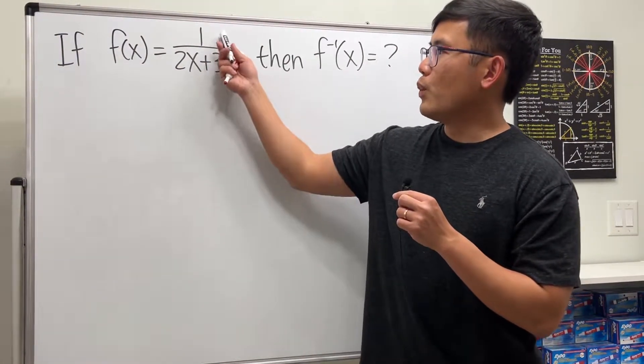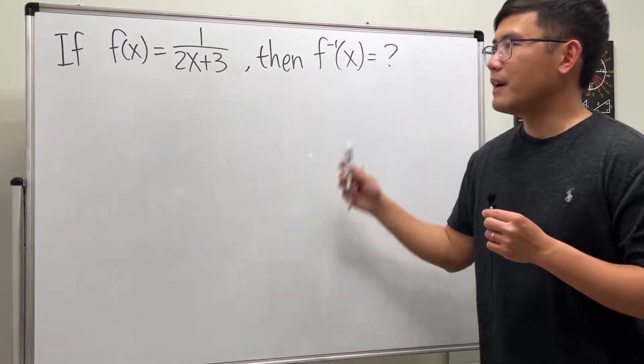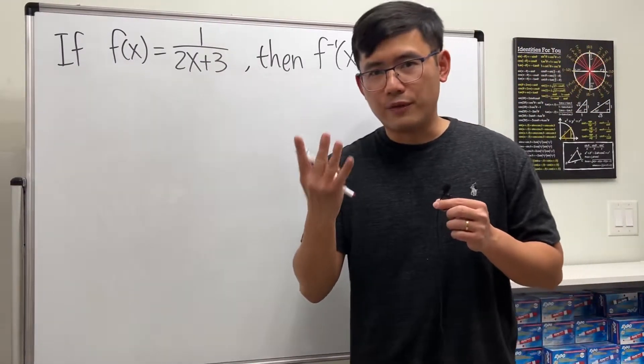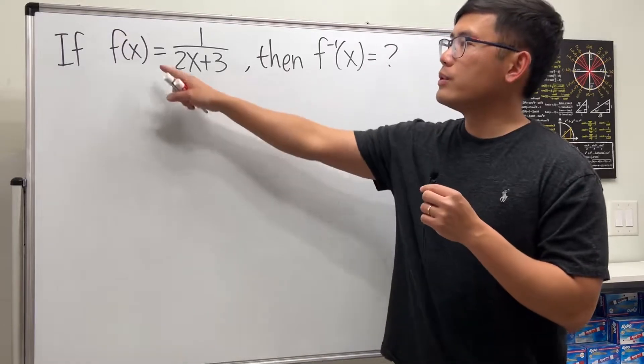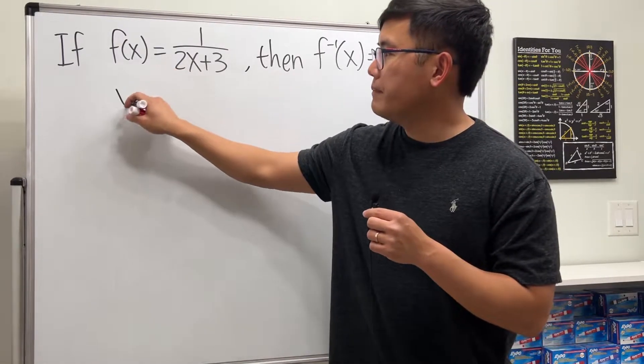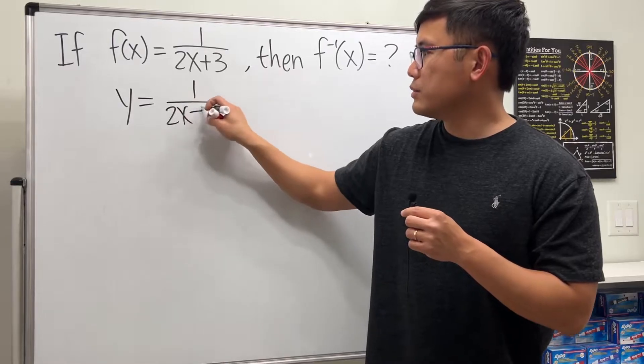Here we are given f of x is equal to 1 over 2x plus 3, and we are going to find its inverse. Follow the four steps. First step, we are going to write f of x as y, so y equals 1 over 2x plus 3.